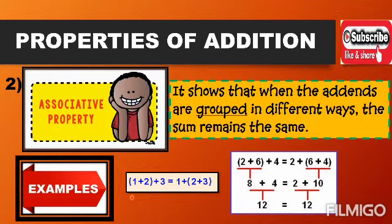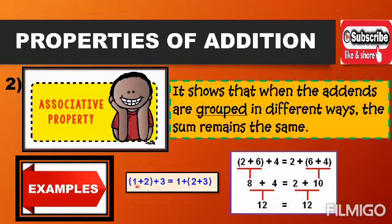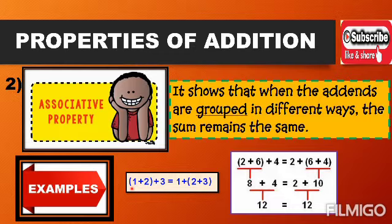For the first example, I have 1, 2, and 3. In associative property, it is just about grouping — you do not change the position of the addends. On the left side, we group 1 and 2 first: (1 + 2) + 3. On the right side, we group 2 and 3: 1 + (2 + 3). The numbers stay in the same order — 1, 2, 3 — you only regroup them, not rearrange them.